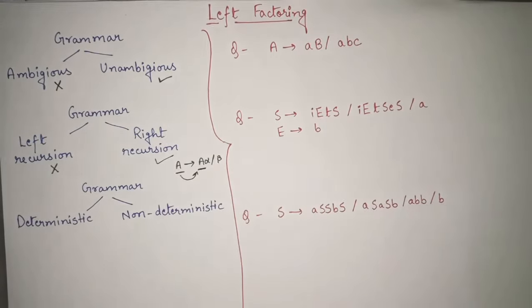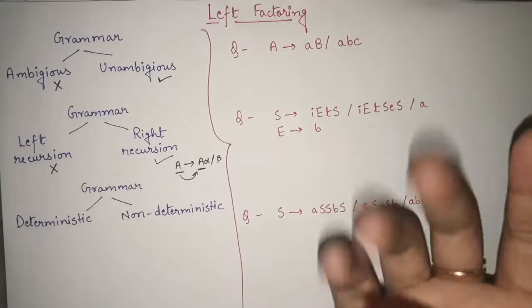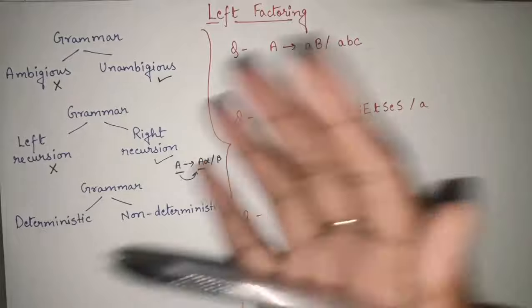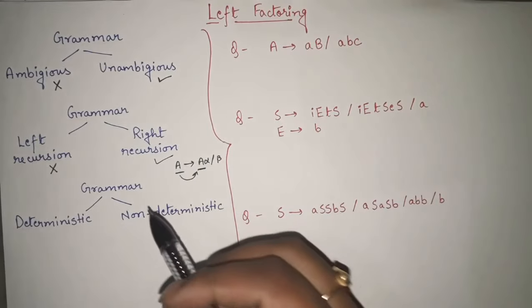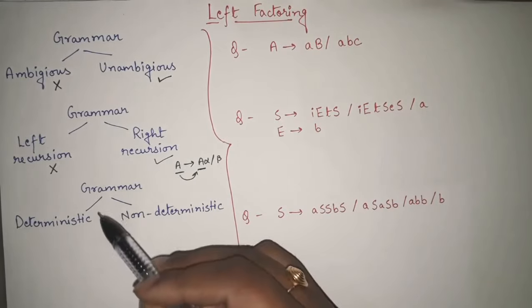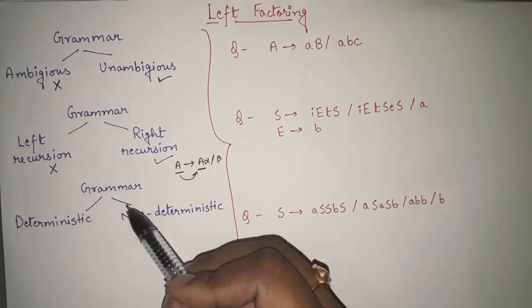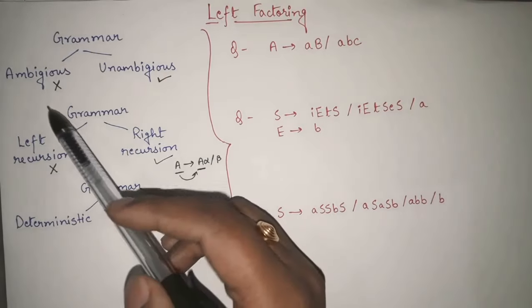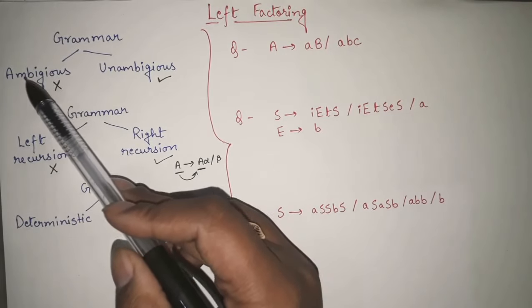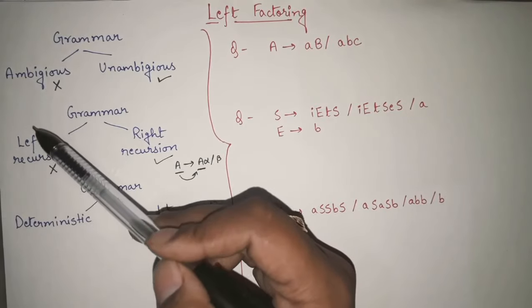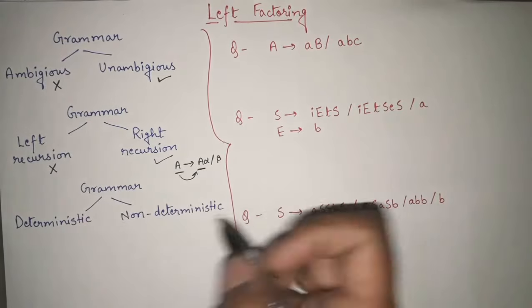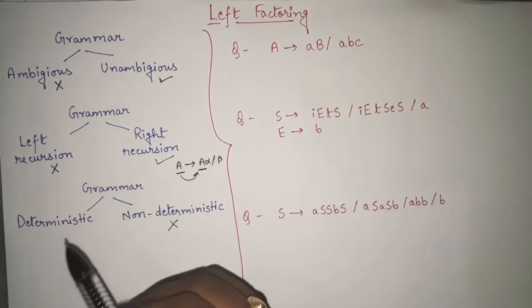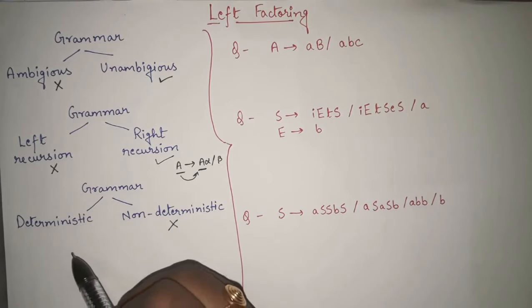In this video, we are mainly concerned about the third categorization: grammar can be either deterministic or non-deterministic. Just like we don't prefer ambiguous grammar or left recursion grammar, we also do not prefer non-deterministic grammar. In deterministic grammar, the productions are such that we can easily determine which production to go into. But in non-deterministic grammar, we cannot determine exactly which production to choose.